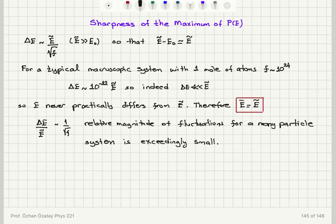Alright, so therefore, we reach the conclusion that energy almost never differs from the most probable energy value, E tilde, and therefore, it is the average value of the energy. It's the mean energy, E bar, we will get.